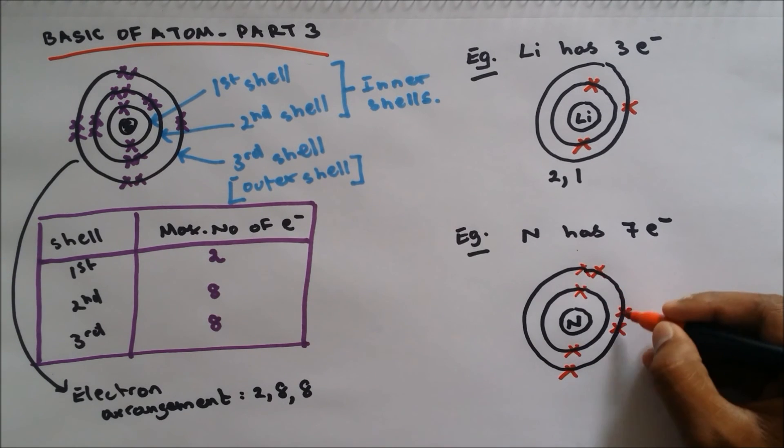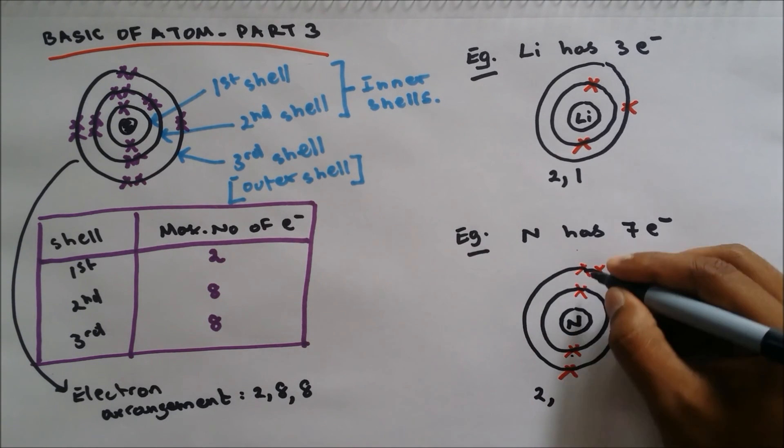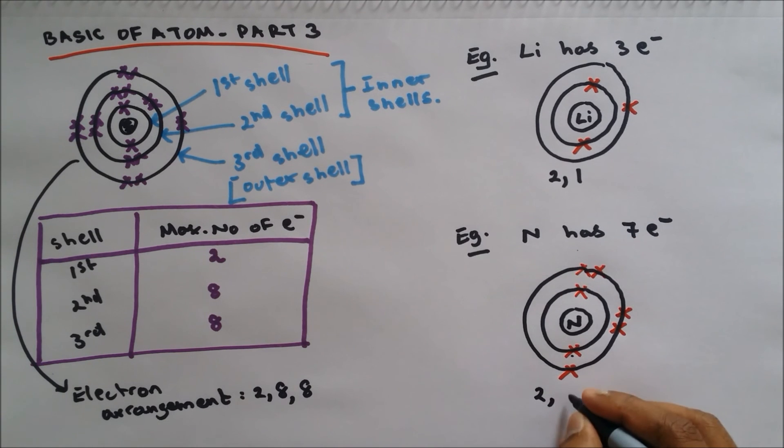So one, two, three, four, five, six, seven. So two in the first shell, and then in the outer shell I got five.